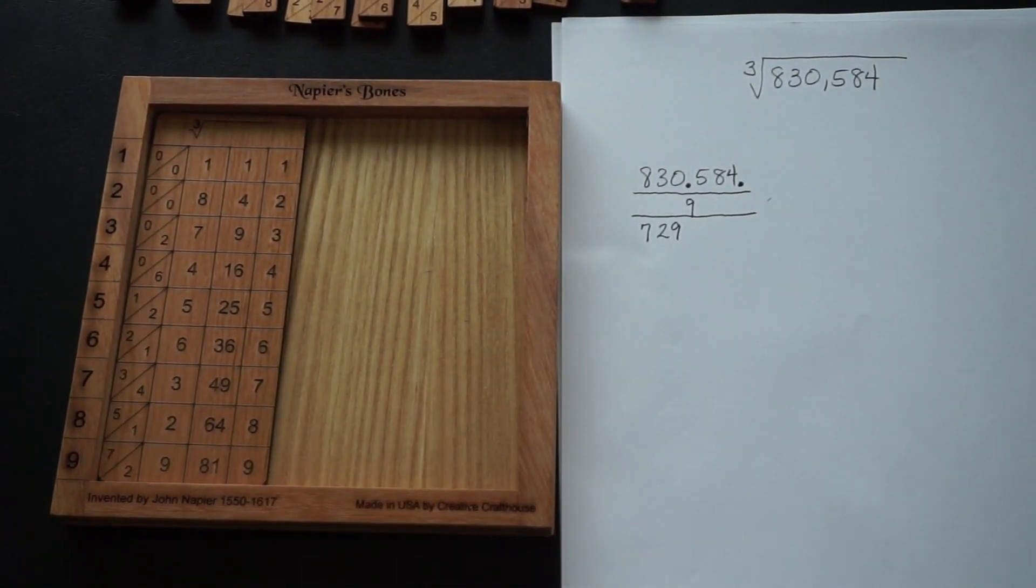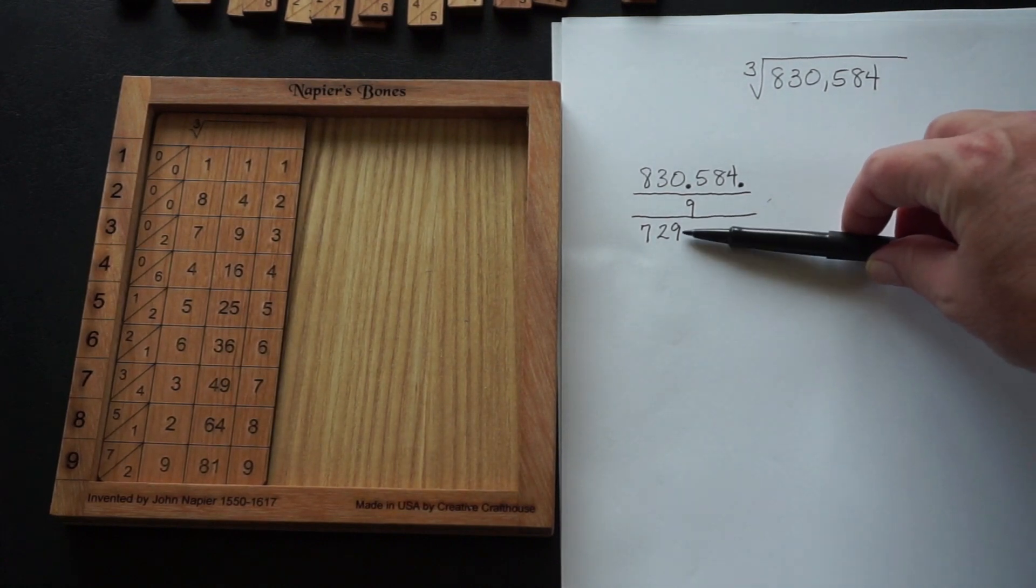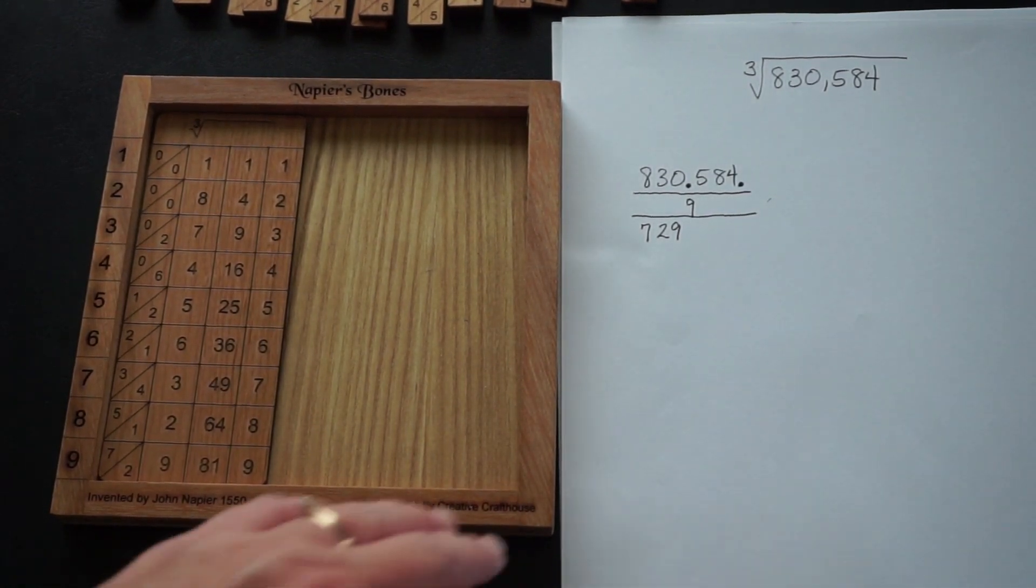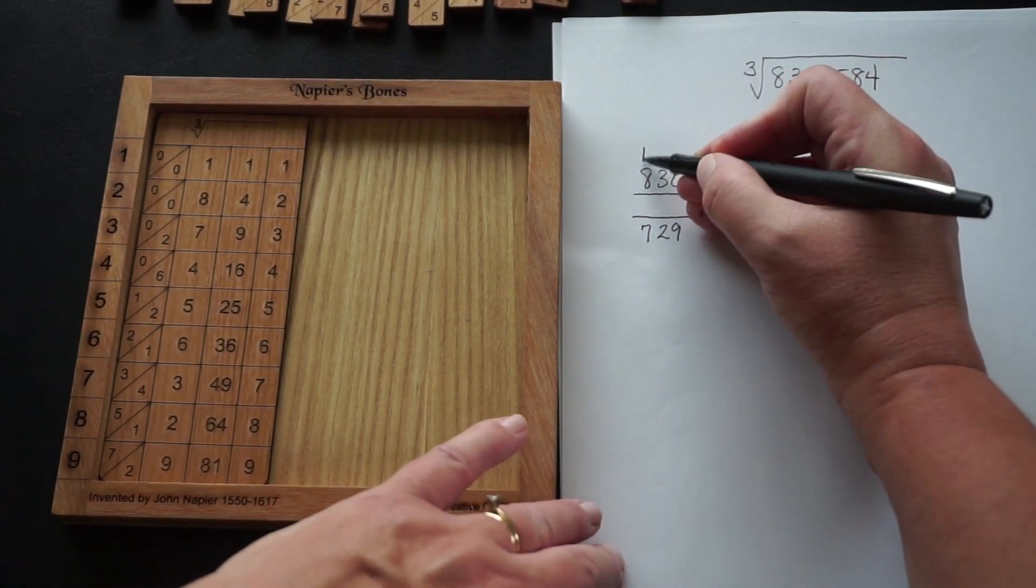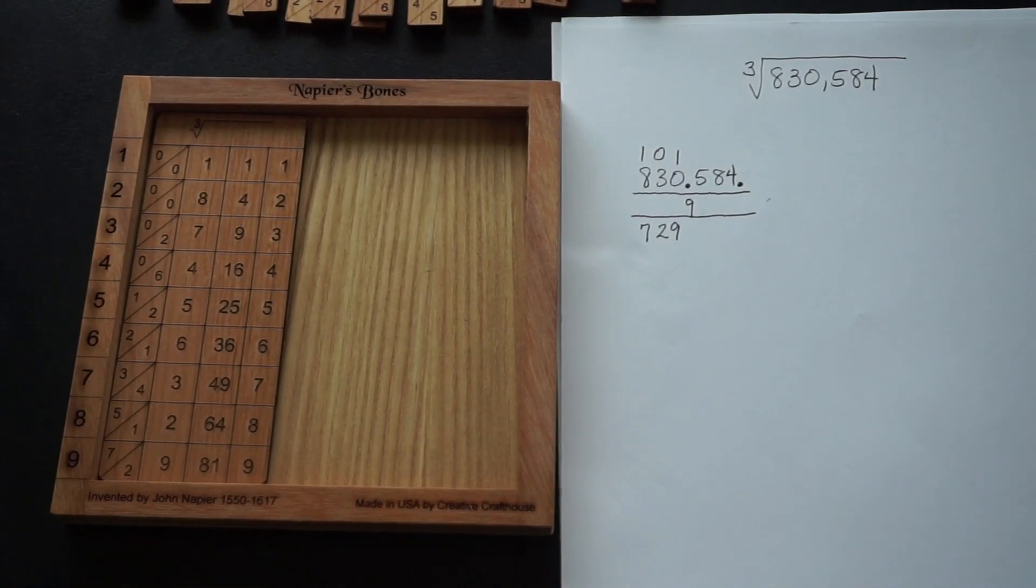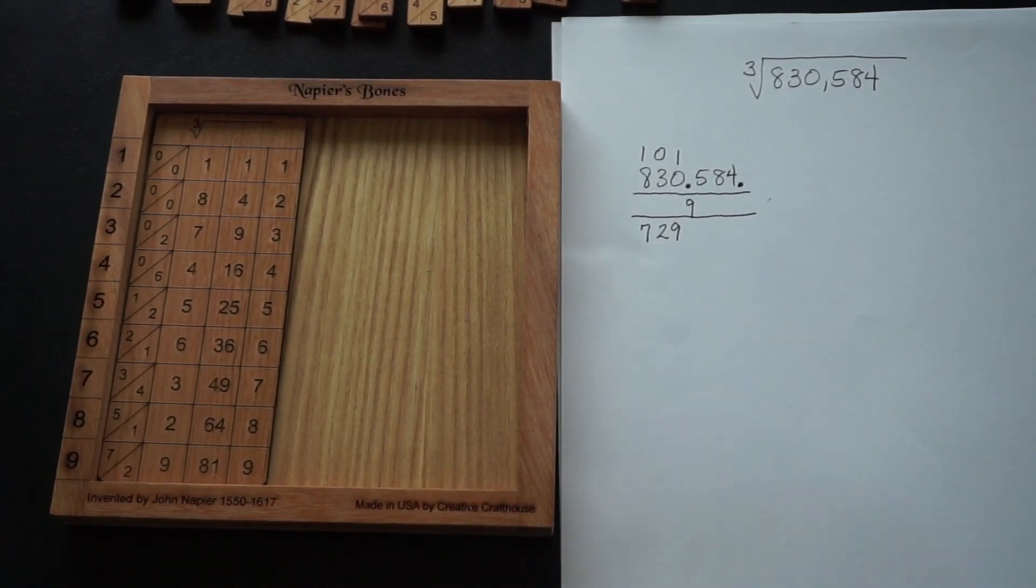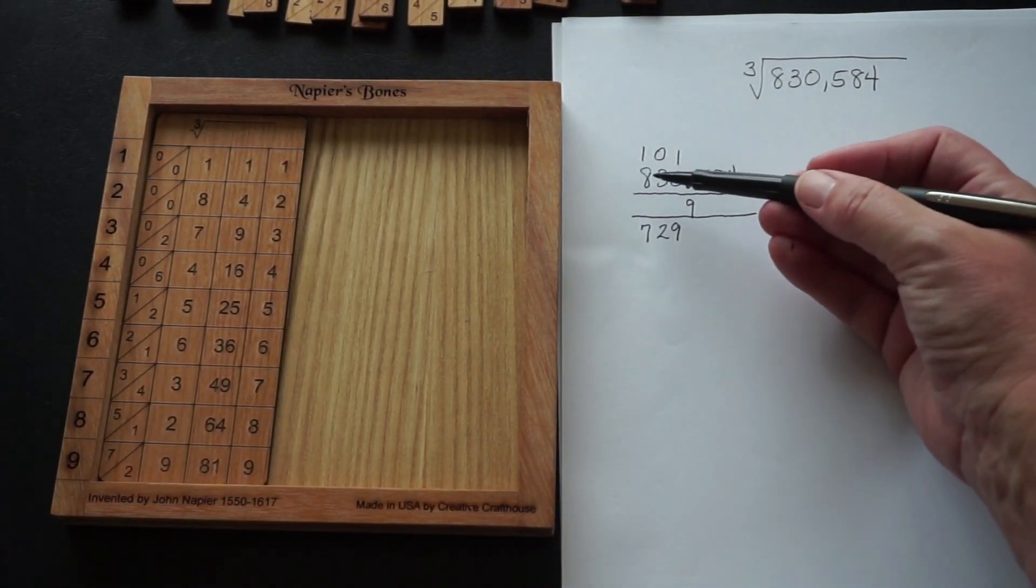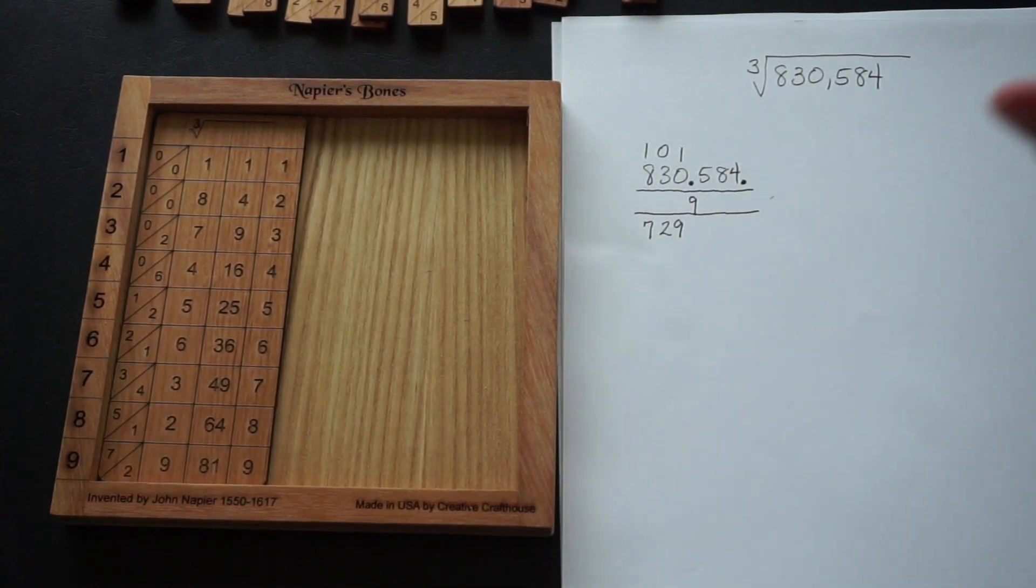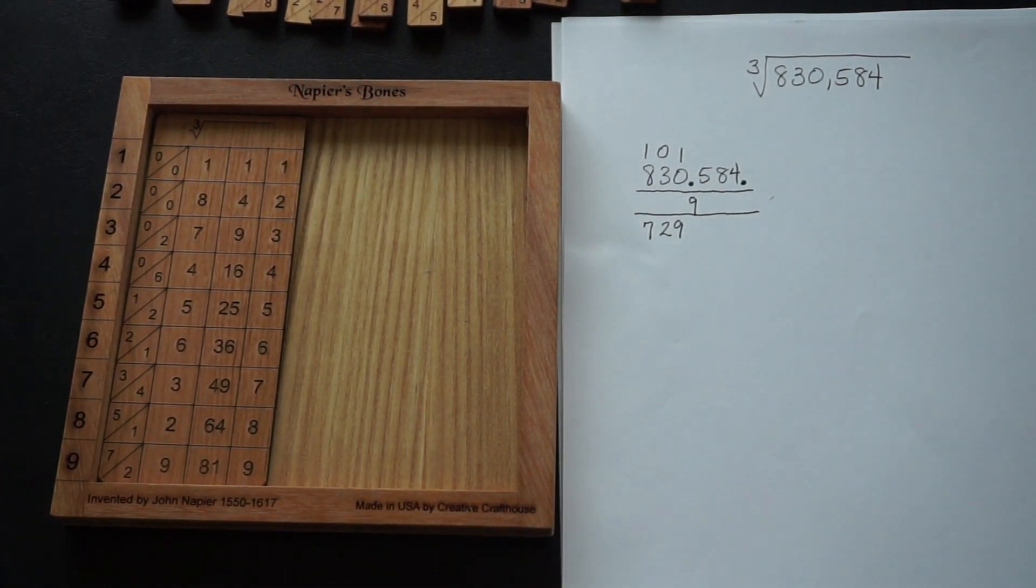The result there is 729, and what we need to do to continue is to subtract the 729 from the 830. The way Napier did that was to write the result on top. I'm a little bit uncomfortable with that. I'm used to doing my subtraction with these two numbers close together and working down, but I'm writing this up just exactly as Napier had done.